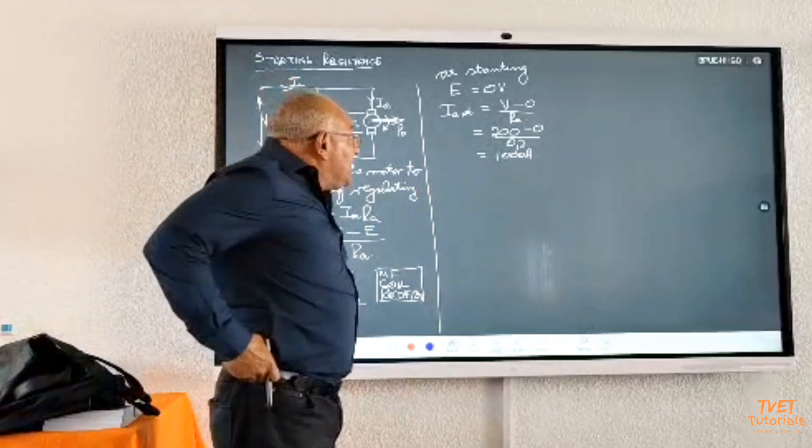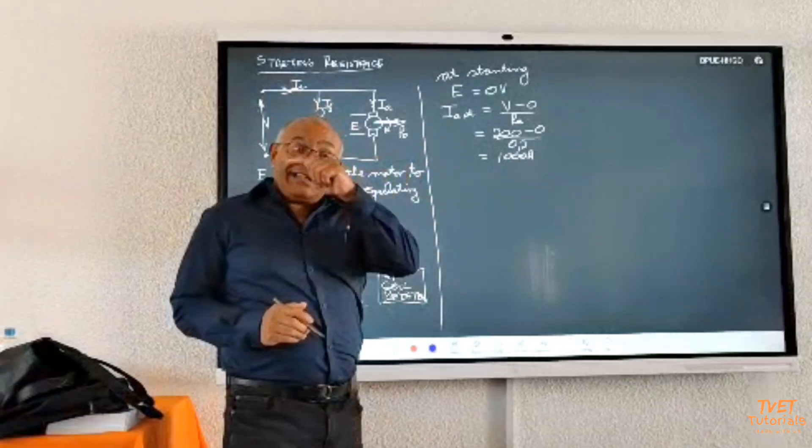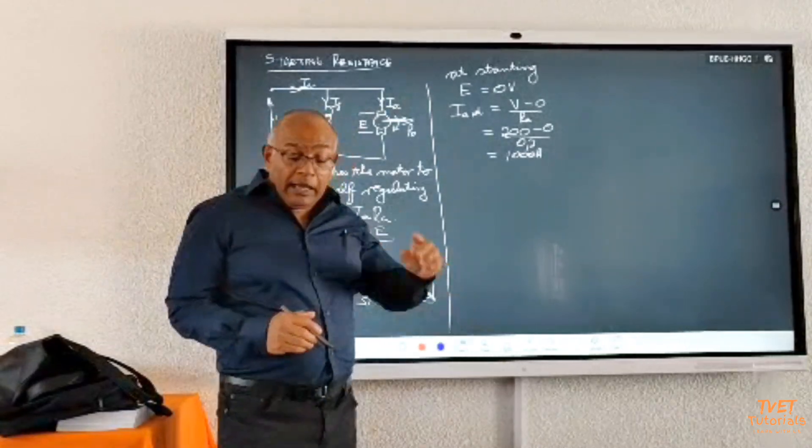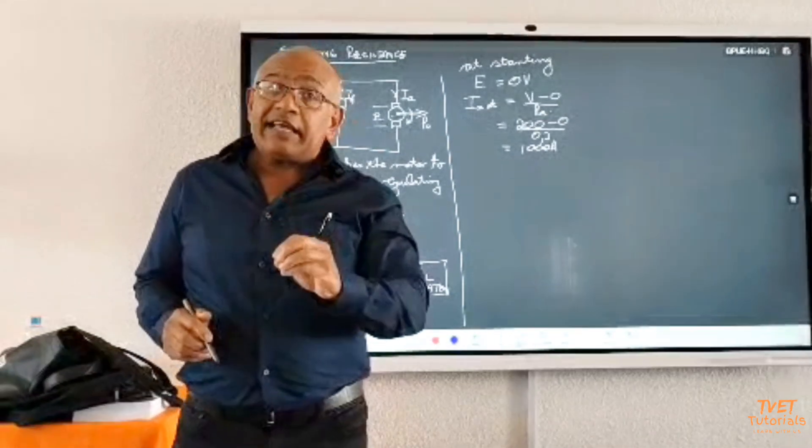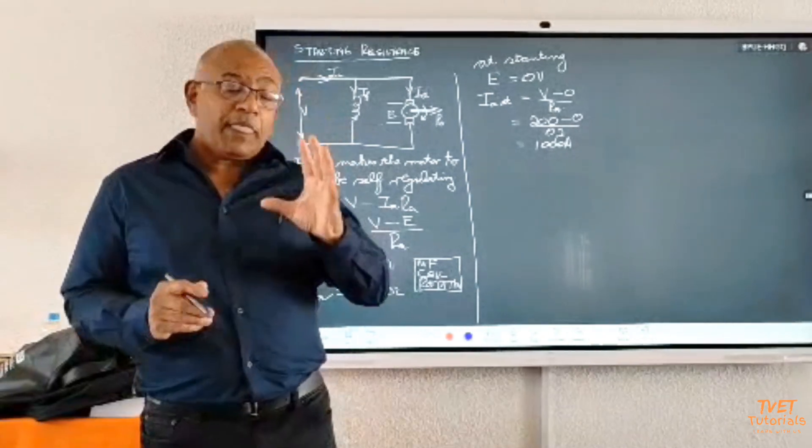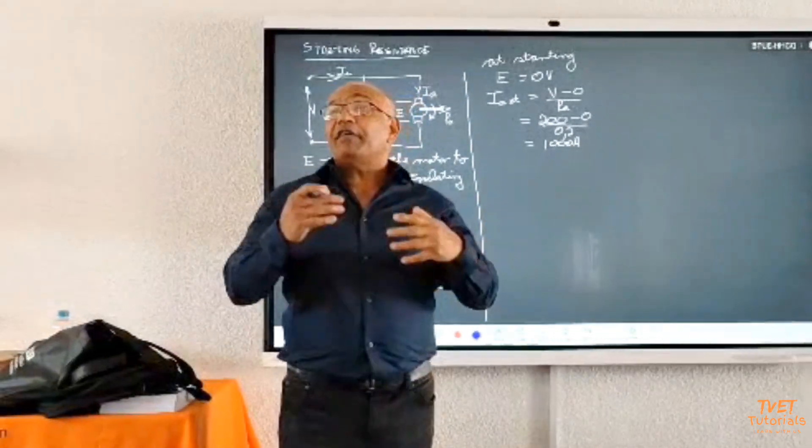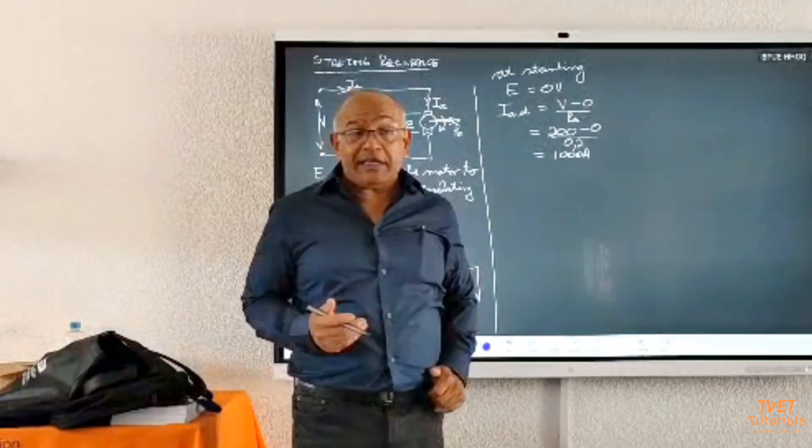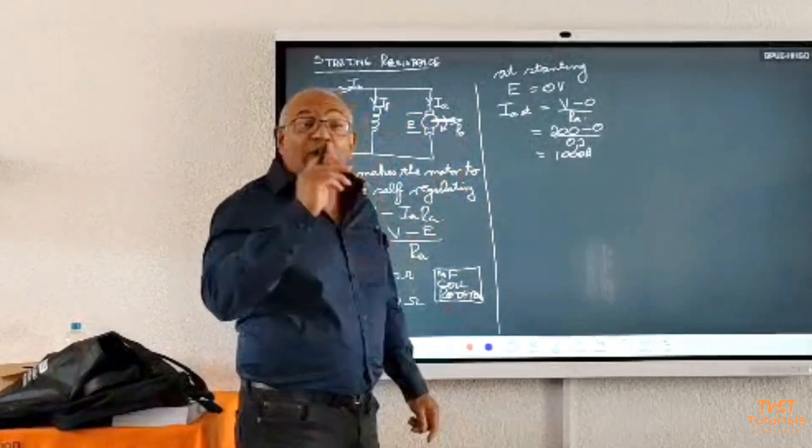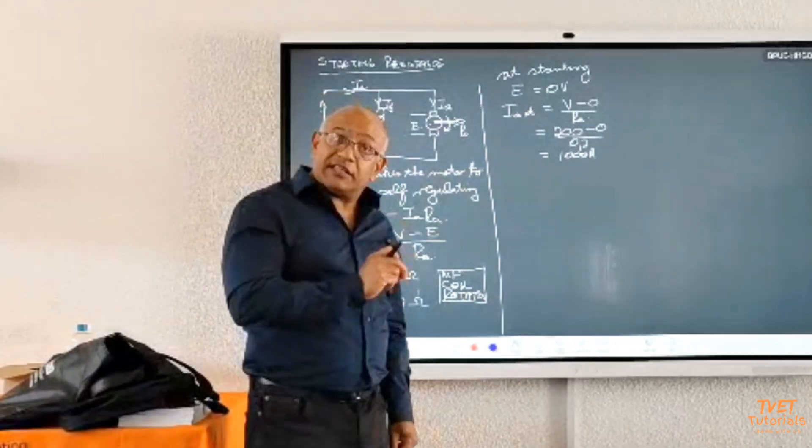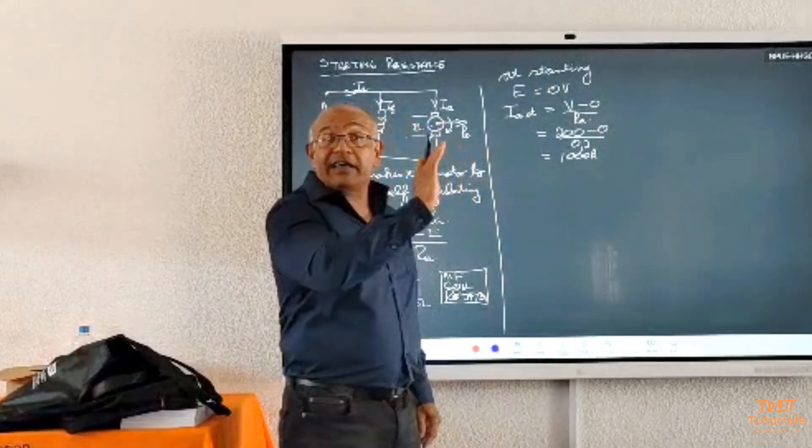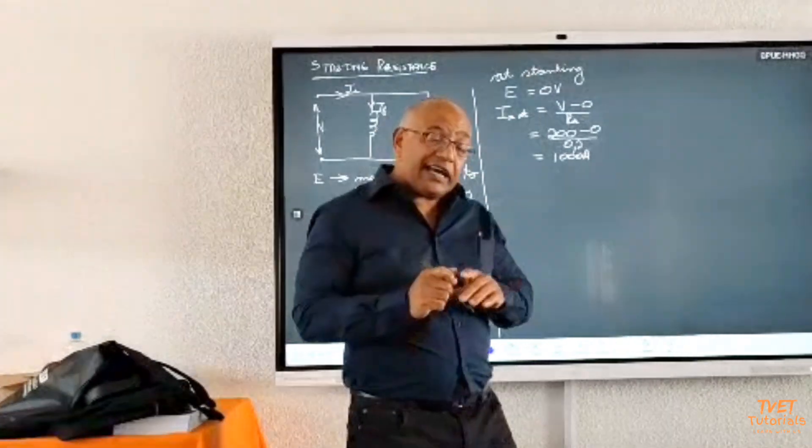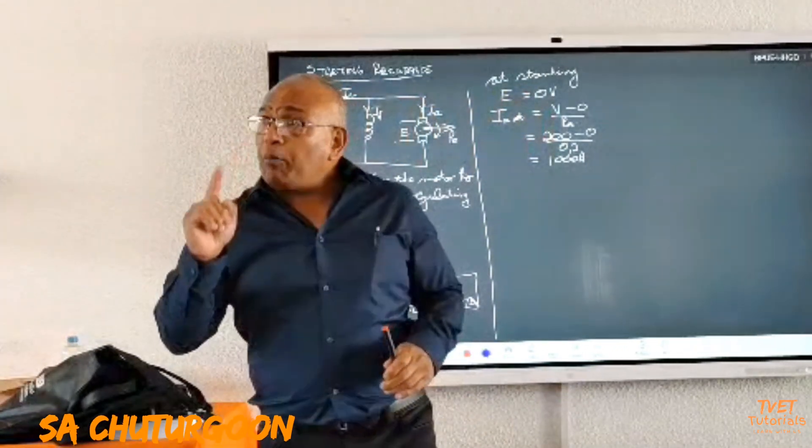That is the reason why we have to bring additional resistance from outside into the armature. But if we make that a permanent connection, the motor will become very sluggish. It will take a long time before it reaches full load speed. That is the reason why we have a resistance starter. The function of the resistance starter is it's a manually operated starter.